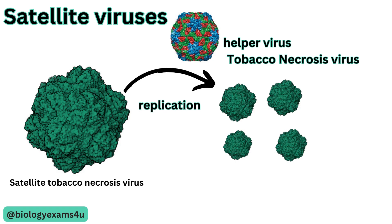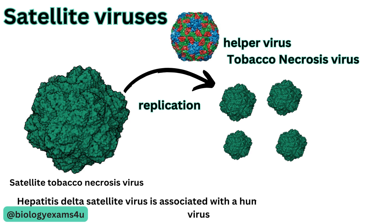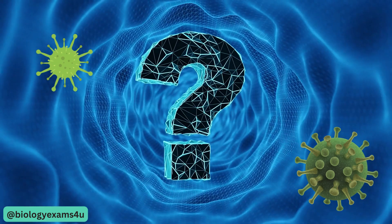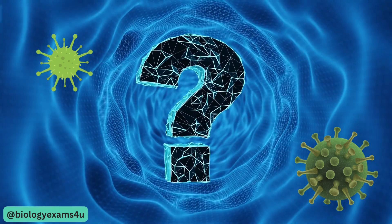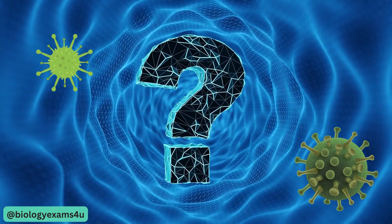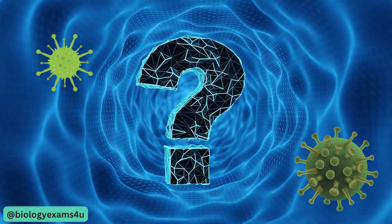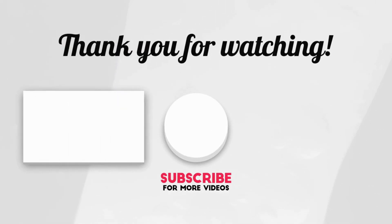In humans, the hepatitis delta satellite virus is associated with the helper hepatitis B virus. Infection with hepatitis delta satellite virus only occurs in individuals already infected with hepatitis B virus, suggesting the essentiality of a helper virus for satellite virus replication. Only this much is currently known about subcellular particles or acellular organisms, and the definition of life is evolving with each discovery of these subcellular organisms.